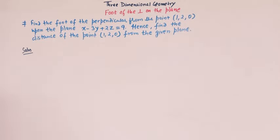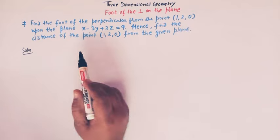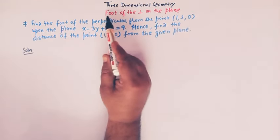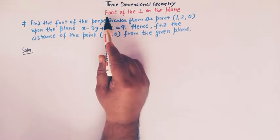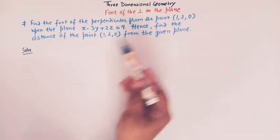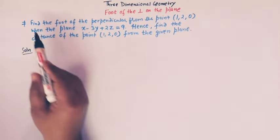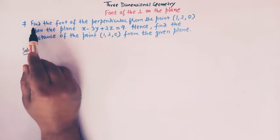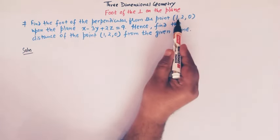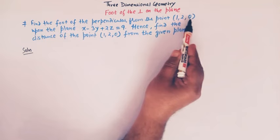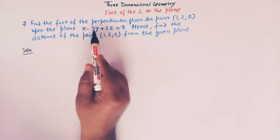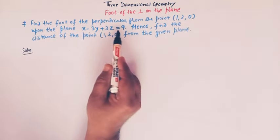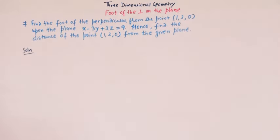Hello viewers. In today's class we are going to discuss yet another important concept from three-dimensional geometry. So here we have the topic: to find the foot of the perpendicular on a given plane. So here we have a problem — find the foot of the perpendicular from the point (1, 2, 0) on the plane x minus 3y plus 2z is equal to 9.